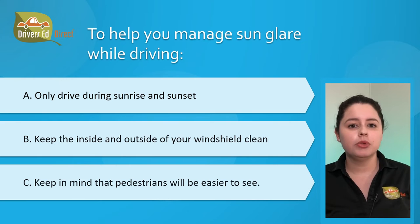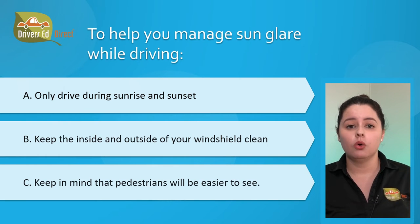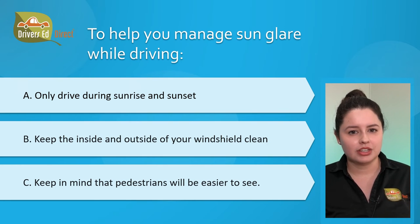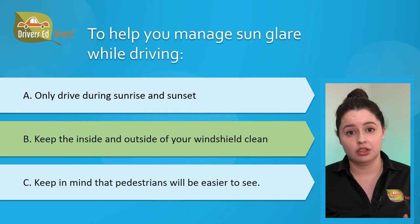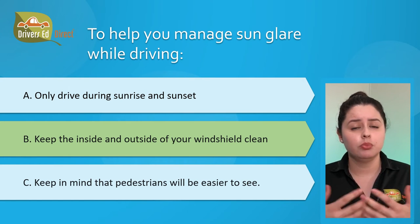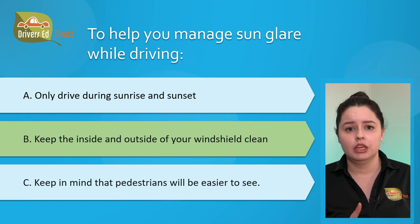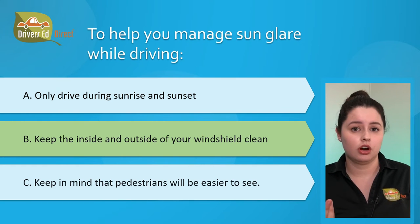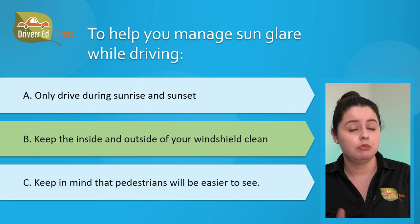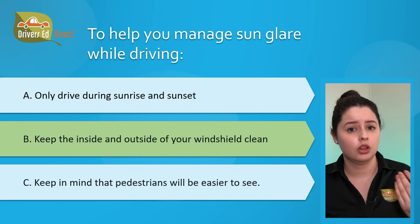Question number ten: to help manage sun glare while driving. A) only drive during sunrise and sunset, B) keep the inside and outside of your windshield clean, or C) keep in mind that pedestrians will be easier to see. The correct answer is B, keep the inside and outside of your windshield clean. Glare from the sun can be dangerous, so try to avoid driving during sunrise and sunset when glare is worst. Keep your windshield clean, wipers in good order, wear polarized sunglasses, use your visor, slow down, and be careful with pedestrians.